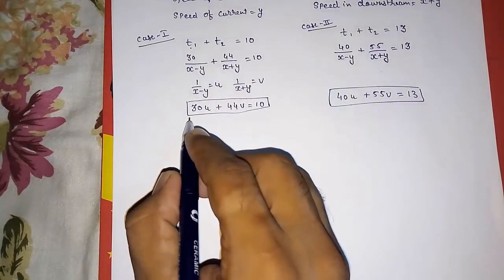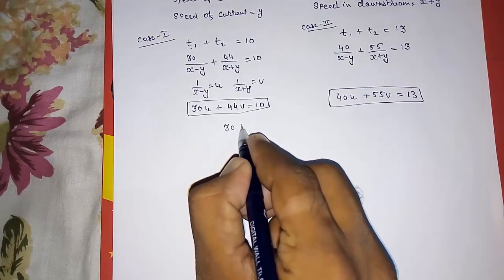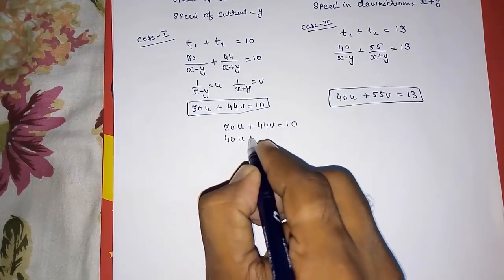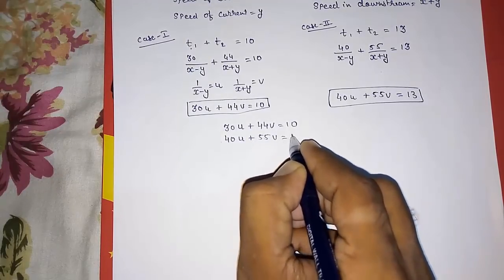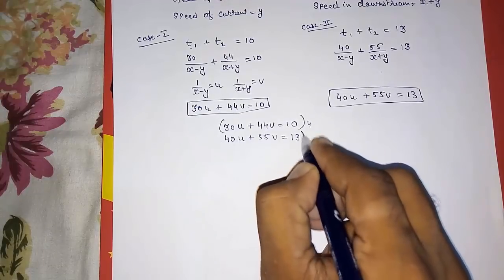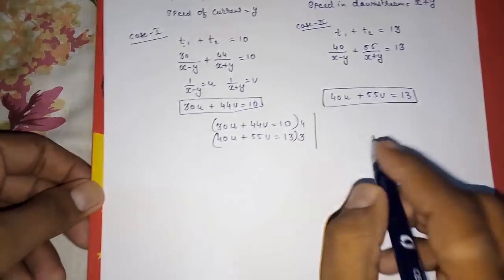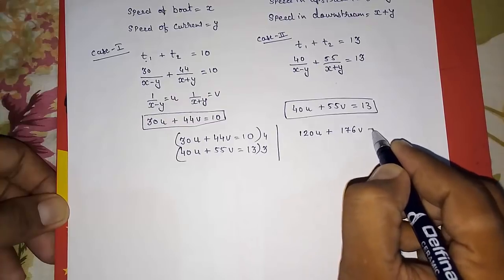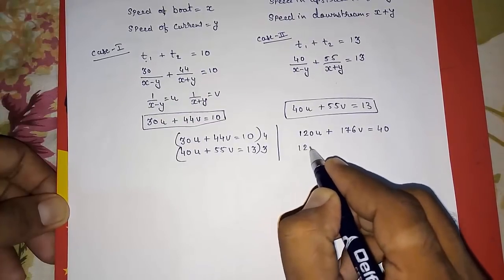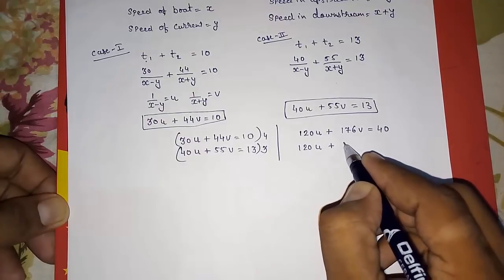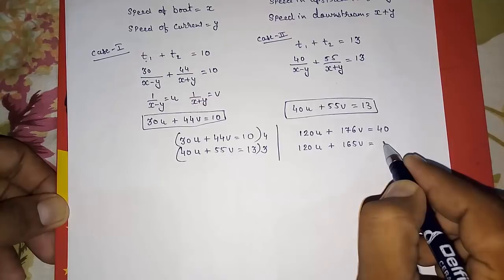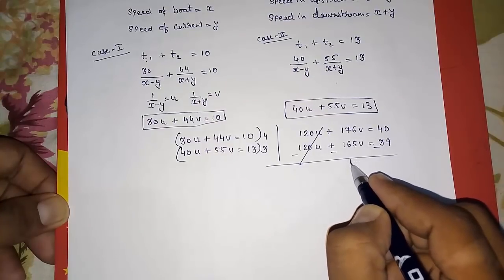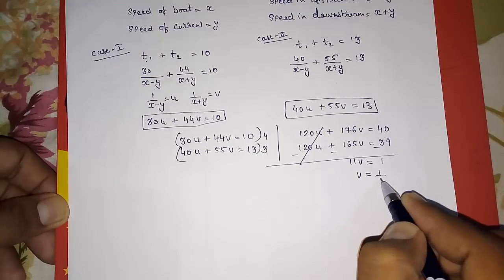We solve by elimination. Multiply the first equation by 4: 120U + 176V = 40. Multiply the second equation by 3: 120U + 165V = 39. Subtracting: 11V = 1, so V = 1/11.